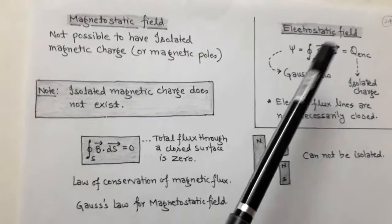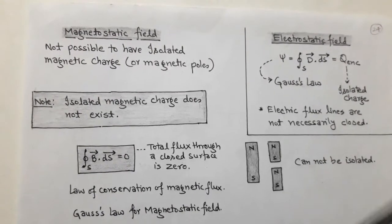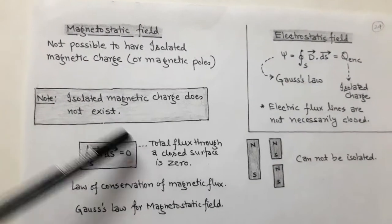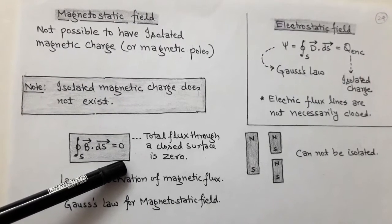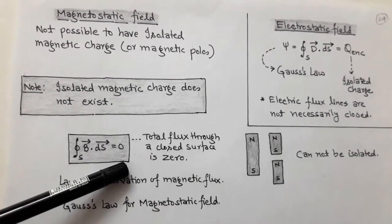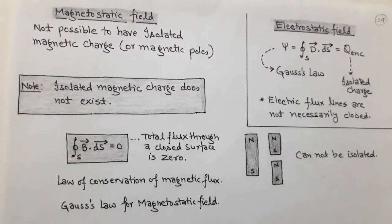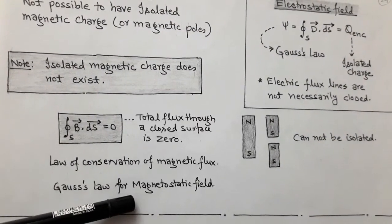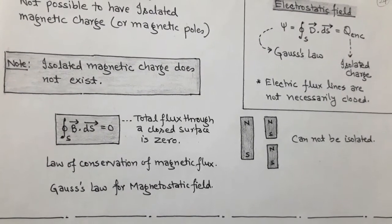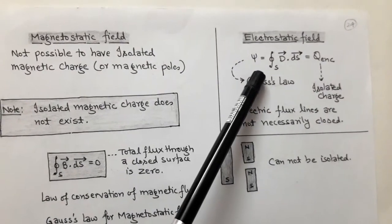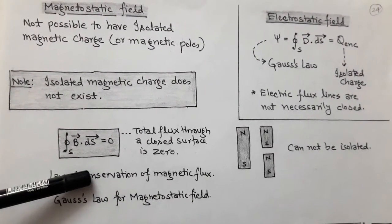In the electrostatic field, the closed surface integration of D·dS equals Q enclosed, because there is an isolated charge. But since there is no magnetic charge in the magnetostatic field, the closed surface integration of B·dS equals 0. This means the total flux through a closed surface is zero, and this is called the law of conservation of magnetic flux — or Gauss's law for the magnetostatic field. Gauss's law in electrostatics: ∮D·dS = Q_enclosed; in magnetostatics: ∮B·dS = 0.